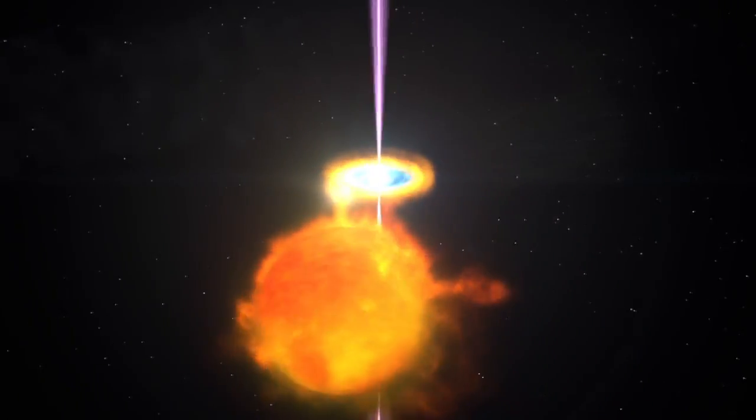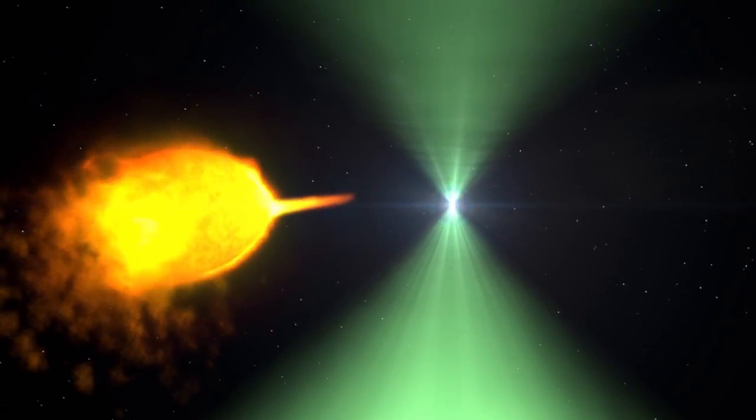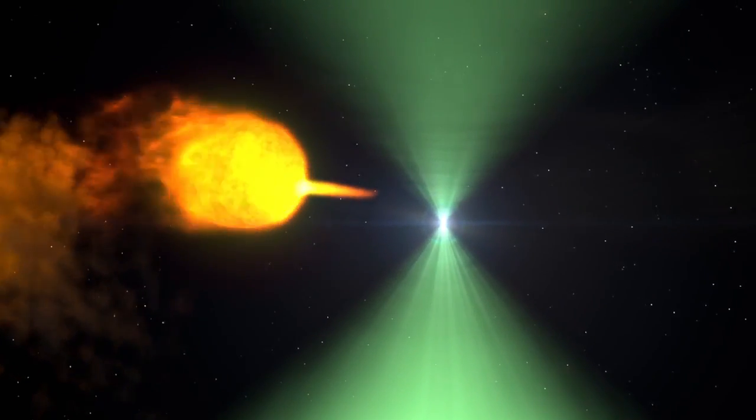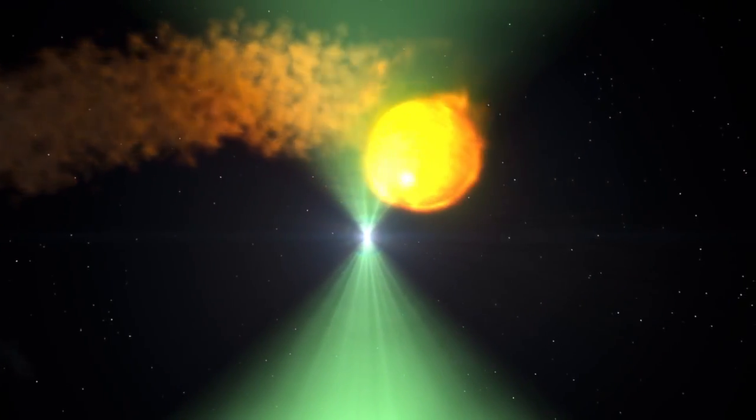Eventually, and for reasons not understood, the companion's flow ebbs. The pulsar wind again becomes dominant, choking off the flow and blowing away the accretion disk. The pulsar flips back to its radio-emitting mode.